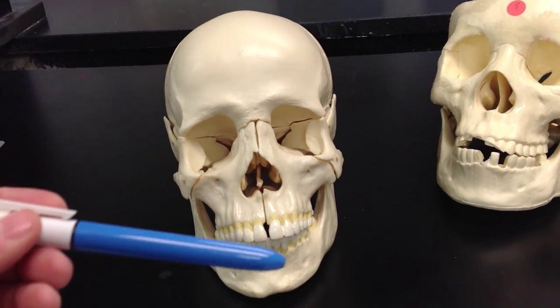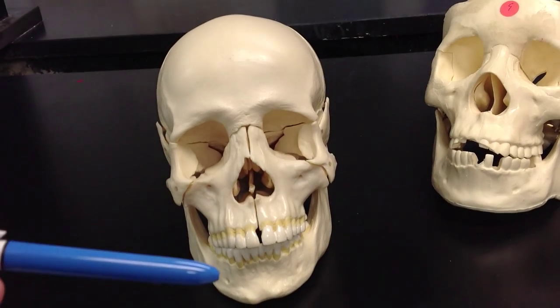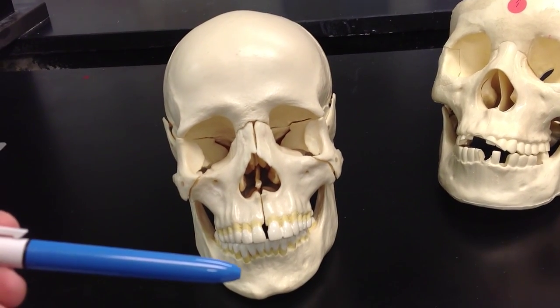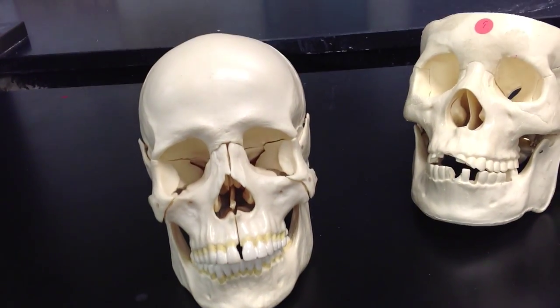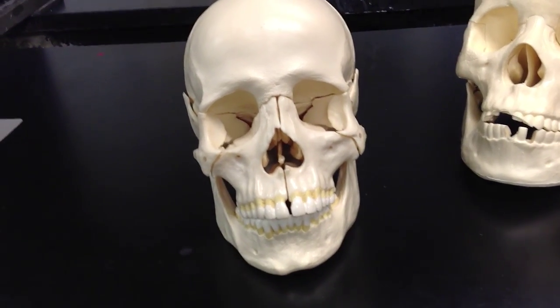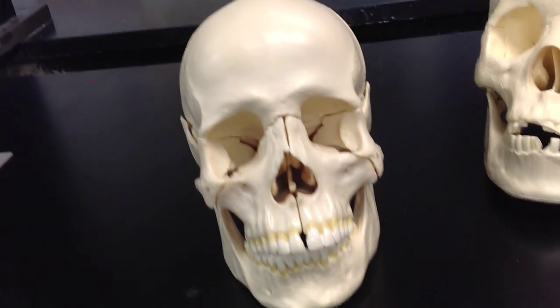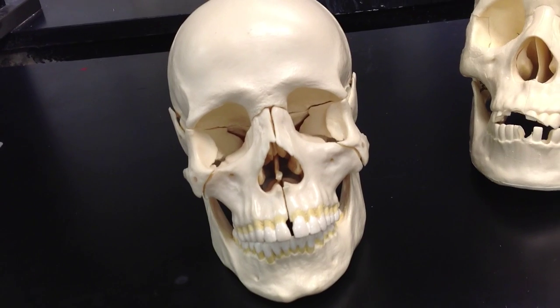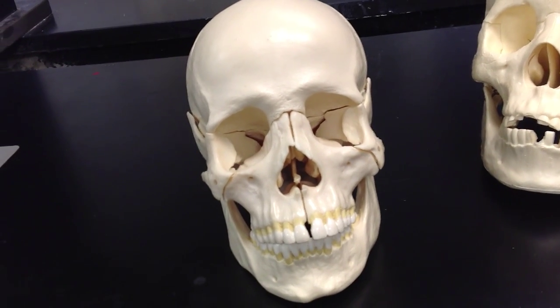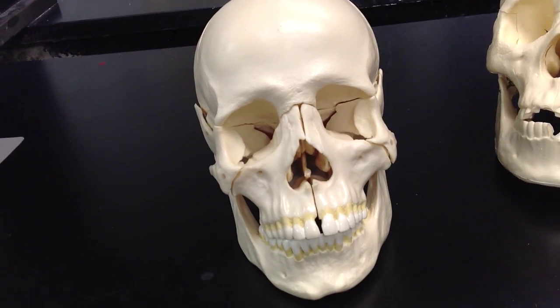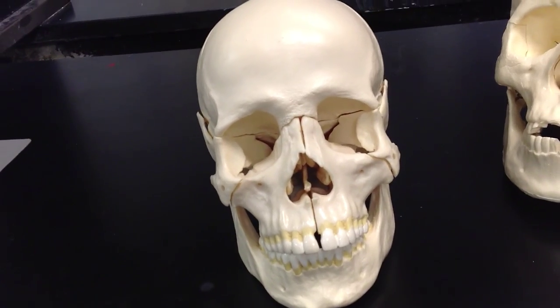Down here at the bottom, we have the mandible. Notice on the mandible we have these little holes right here and right there. Those are called the mental foramina, and those have the trochlear nerve that is deadened when you go to the doctor. So if you receive a shot from the dentist, that is the nerve that is being deadened.